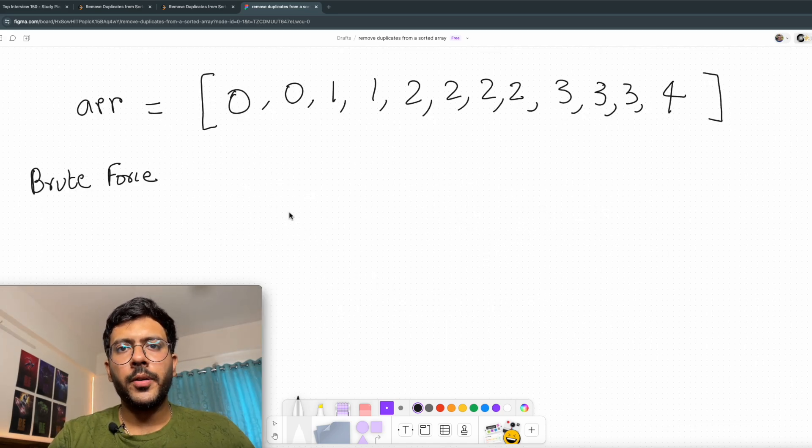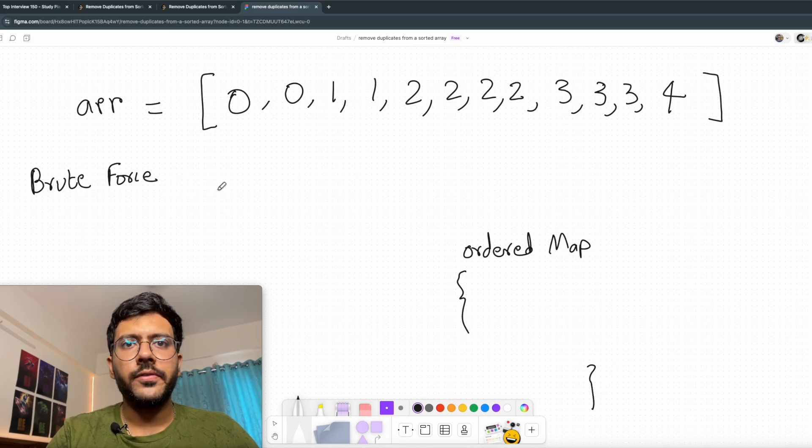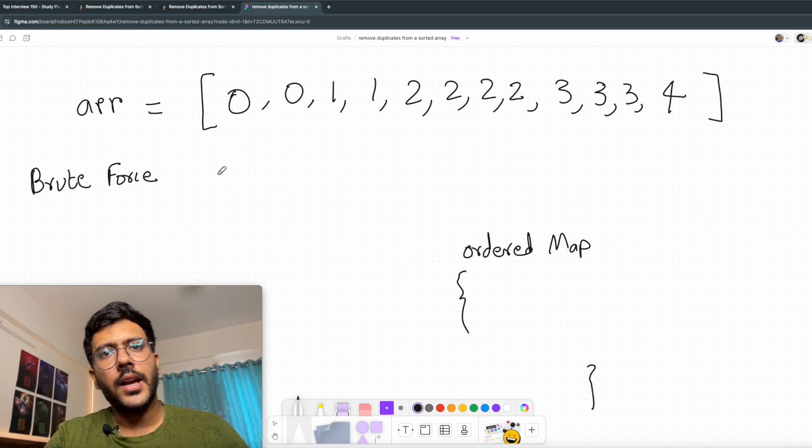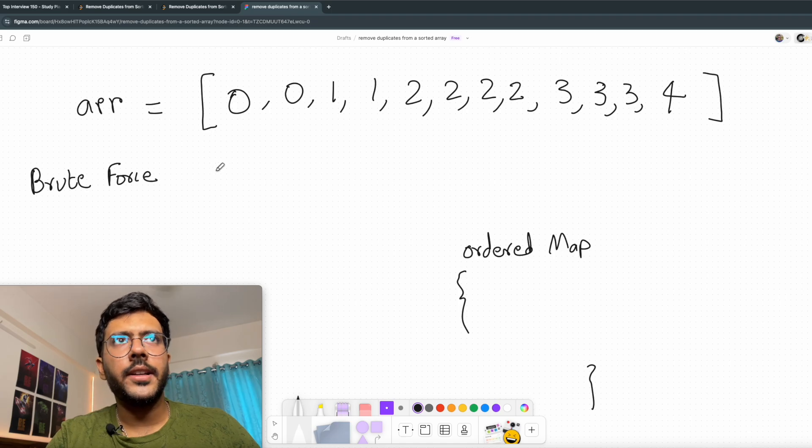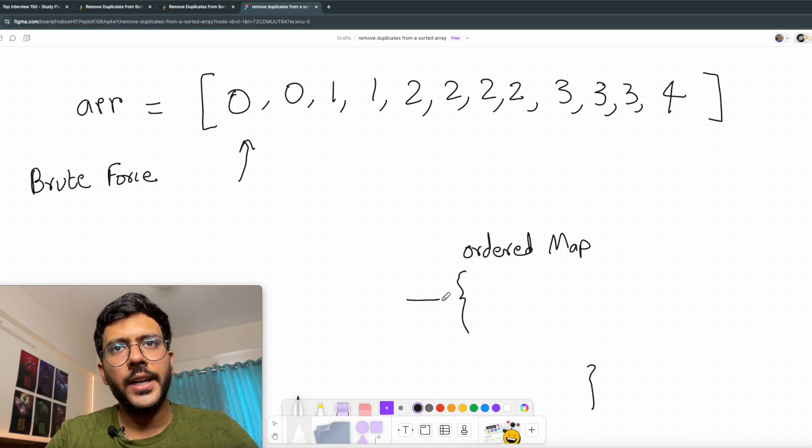So first let me tell you about the brute force solution. We will use an ordered map for brute force. Let's say this is my map. Now for the brute force we will traverse through the entire input array. For example, I go to the first element. I see the value is 0. I put it into my map.